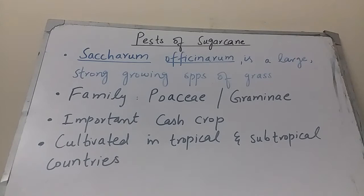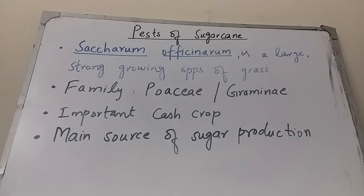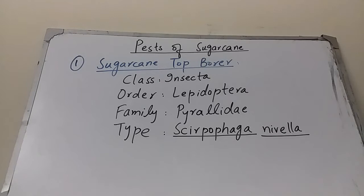Sugarcane is an important cash crop because a country earns money through its export. It is cultivated in the tropical and subtropical countries of the world, and it is one of the main sources of sugar production. Pests represent one of the biggest threats for farmers growing this powerful cash crop.